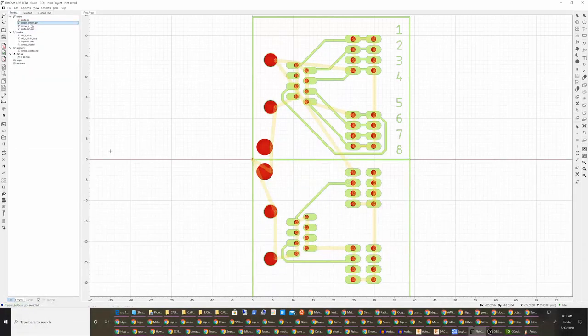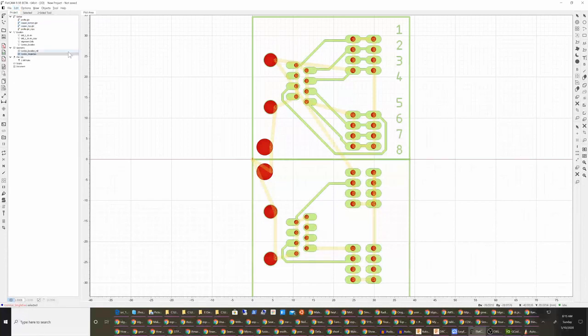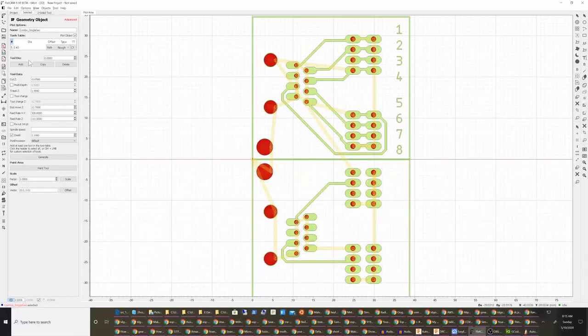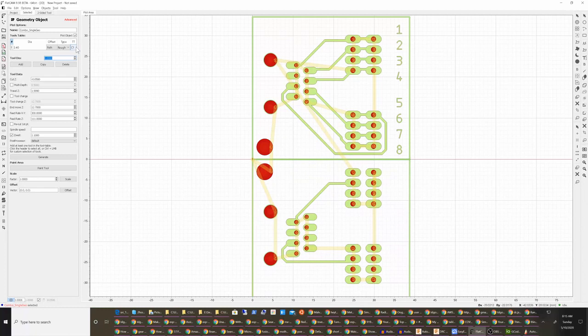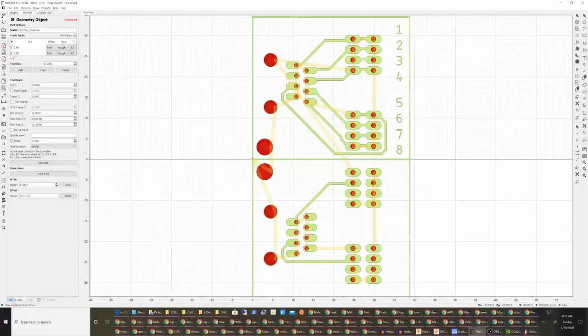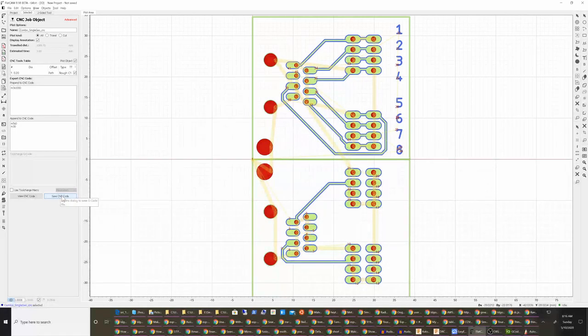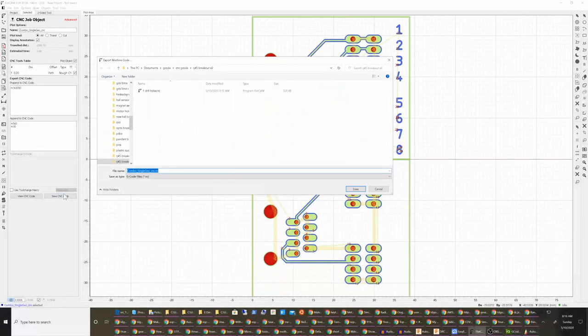The next thing I want to do is create, make sure I have this set right. I want to combine the traces and add my tool here, 0.2 millimeter tool. That all looks correct. We'll call this top traces.